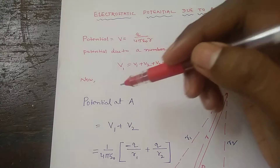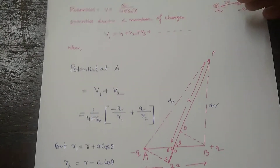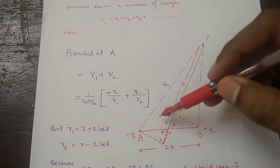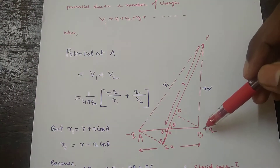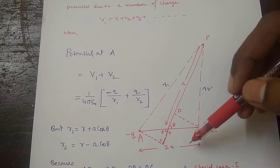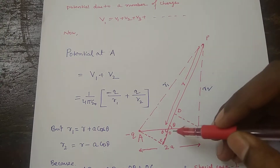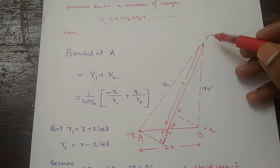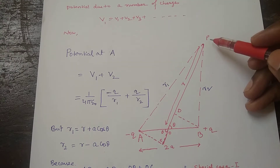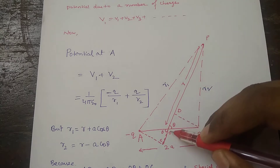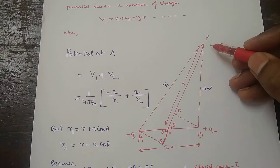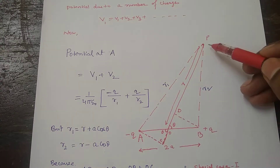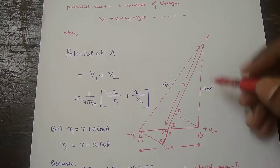Now, as you can see in the figure, the minus Q charge is at point A and the plus Q charge is at point B, separated by a distance 2A. From the center O, there is a point P at which we have to find the potential. The distance from center O to point P is R, the distance from A to P is R1, and B to P is R2.